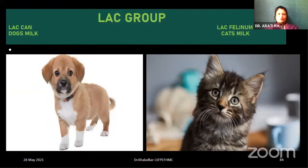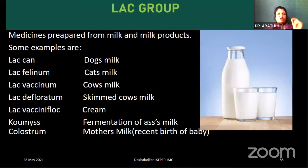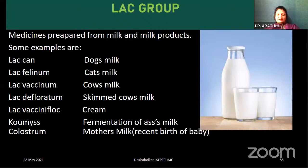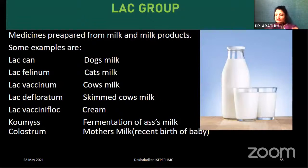Next, we have the lac group — prepared from milk and milk products. Whenever we want to say a drug is prepared from milk, we prefix it with lac. Lac caninum is dog's milk. Lac felinum is cat's milk. Lac vaccinum is cow's milk. Lac defloratum is the skimmed cow's milk. Lac vaccinum flos is prepared from the cream. We have cow's whey — fermentation of acid milk. Then colostrum — prepared from the mother's milk after recent birth of a baby. These are examples of the lac group, and short notes are often asked on this.